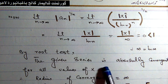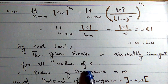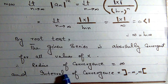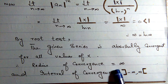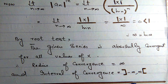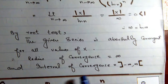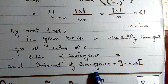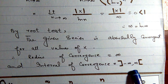By the root test, the given series is absolutely convergent for all values of x. Therefore, the radius of convergence is infinite.